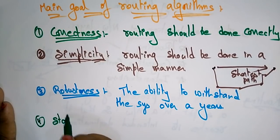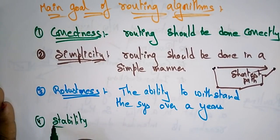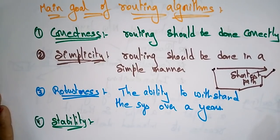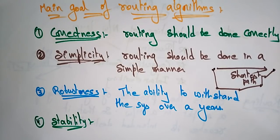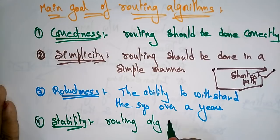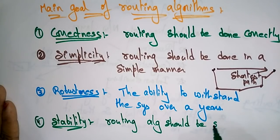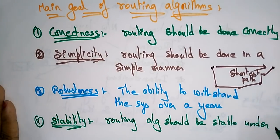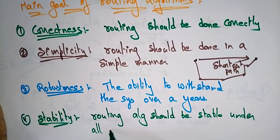The fourth goal is stability. Whatever routing is done with the help of routing algorithms, it must be stable. The routing algorithm should be stable under all possible circumstances.